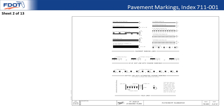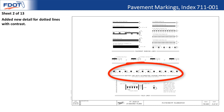Index 711-001, pavement markings: on sheet 2 of 13, there is a new detail for the contrast marking with dotted lines. Previously when shown alternating on every single skip, the dotted lines could appear almost continuous, so now it's just alternating — every other skip has a contrast shown.